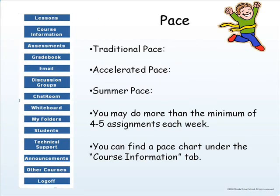There are three different paces for this course: traditional pace, accelerated pace, and summer pace. You can decide which one works best with your timeline. The key thing I'll be looking for is that you're submitting a minimum of four assignments each week, which will help us get through the course in roughly 16 to 17 weeks per semester. If you need help setting up your own individualized pace chart, that can also be arranged.